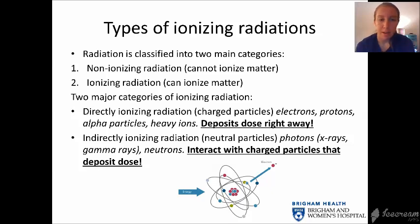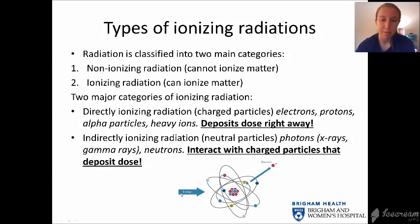Then there's indirect ionizing radiation, which involves neutral particles — particles that don't have a charge — including photons, which can be x-rays or gamma rays, and neutrons. These interact with charged particles that then deposit their dose. In the diagram, a photon comes in to the atom and kicks the electron out, thereby ionizing the atom.